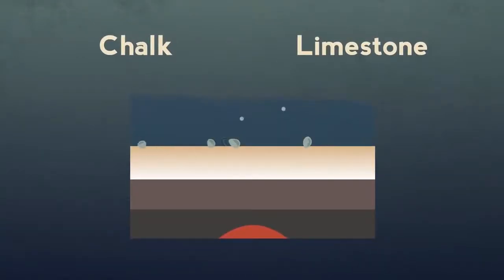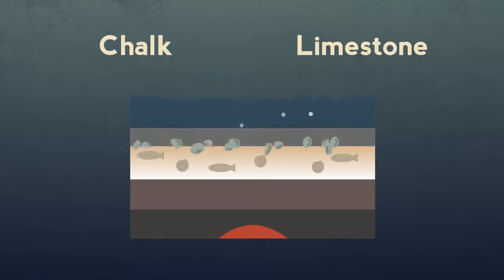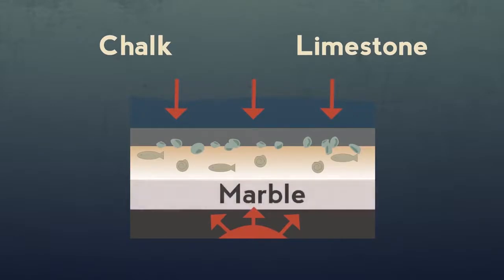We must also mention chalk and limestone, made of calcium carbonate, which are sedimentary rocks formed in the sea from the shells of dead sea creatures. Under heat and pressure, they form the metamorphic rock marble.